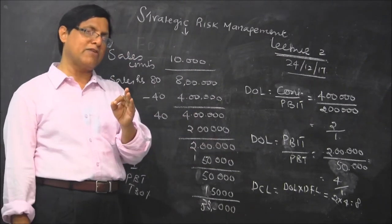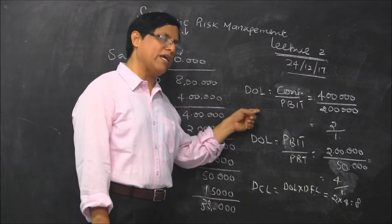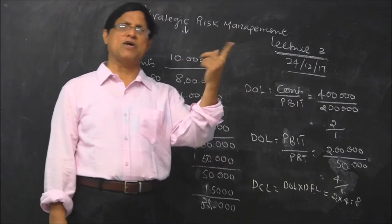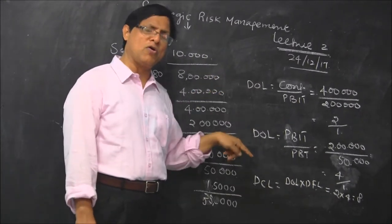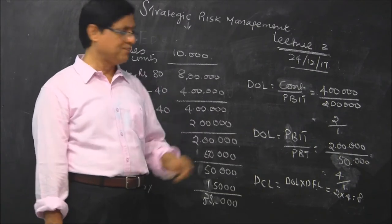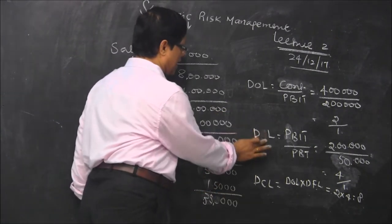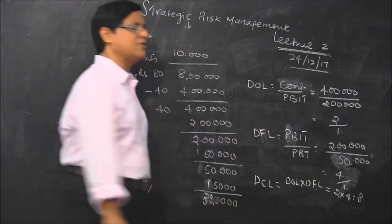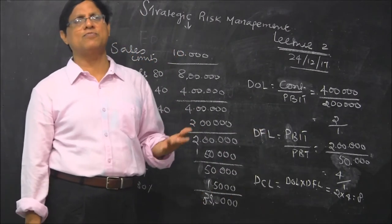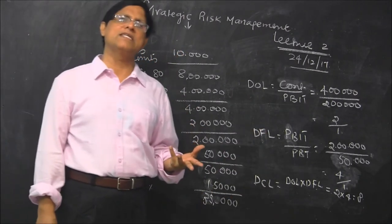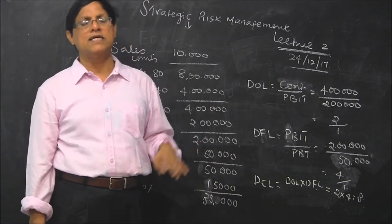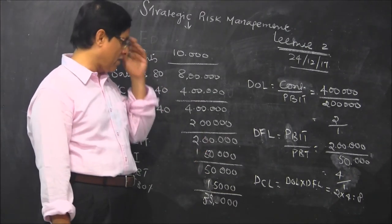What you should understand friends? If DOL is more, it means fixed cost is more. DOL is low, fixed cost is less. DFL, if financial leverage is more valued, it means risk is high. If the value is less, the risk is less. That is what you should understand.